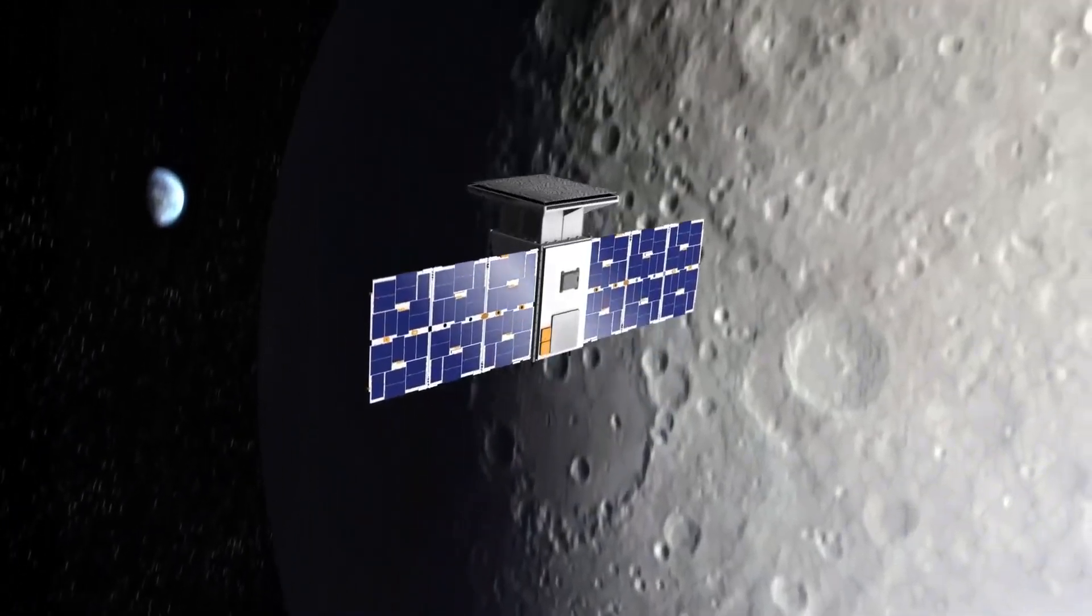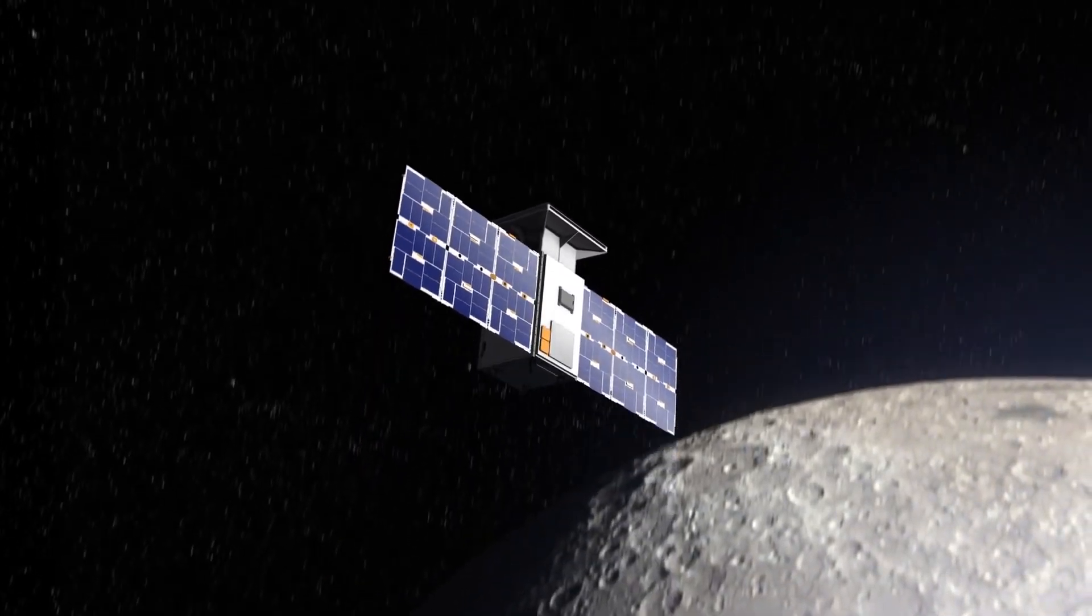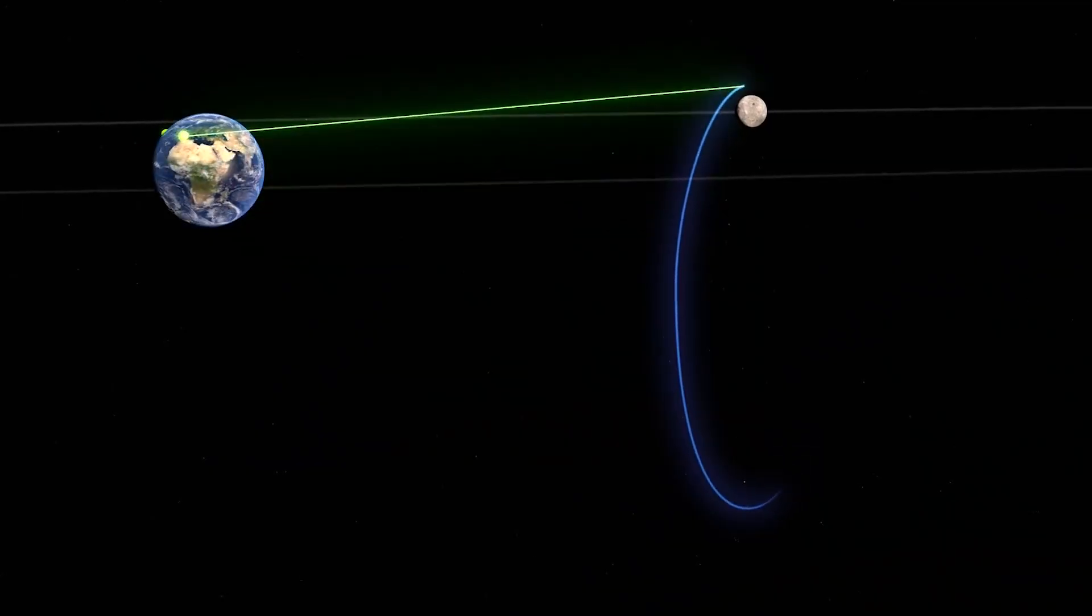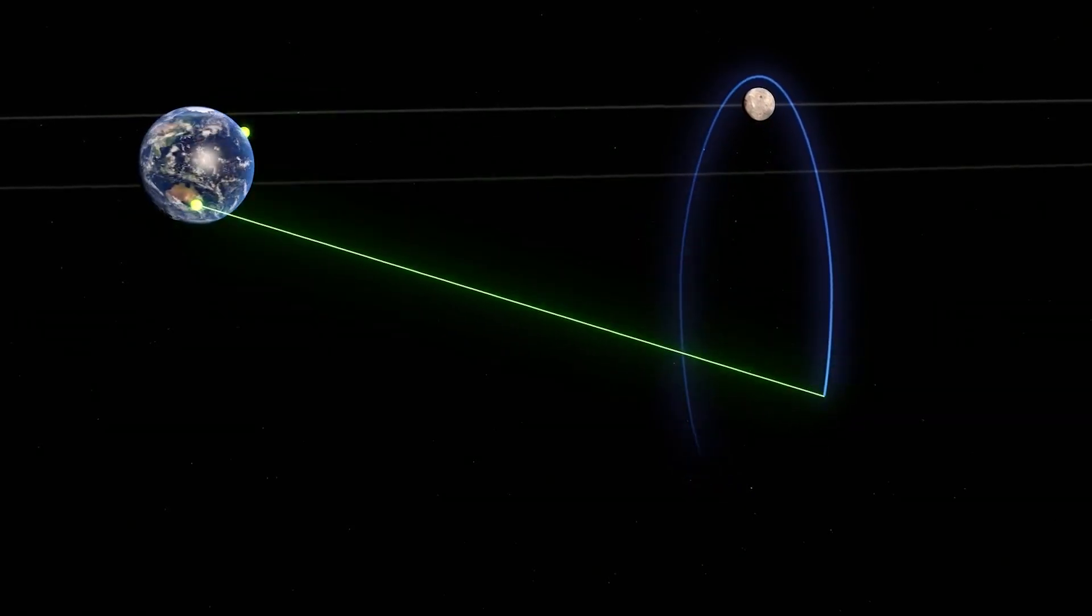The path provides an unobstructed view of Earth as it orbits the Moon's poles and allows for continuous communications with ground-based control centers.